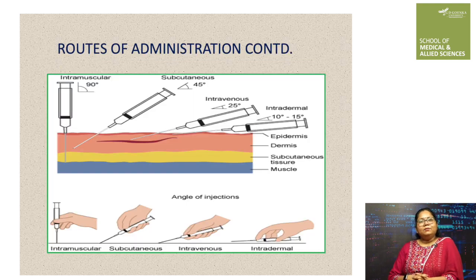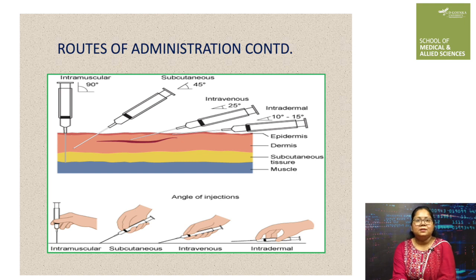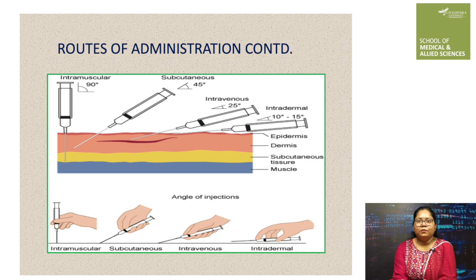The intravenous route involves the introduction of a drug solution directly into a blood vein using a syringe through a needle or a needleless port on an existing IV line. It is the best way to deliver a dose rapidly and accurately, as the drug enters directly into the systemic circulation without any delay in absorption, achieving its therapeutic effect faster than other routes. This route represents 100% bioavailability since the active ingredient reaches the site of action without suffering alteration due to pre-systemic effects.